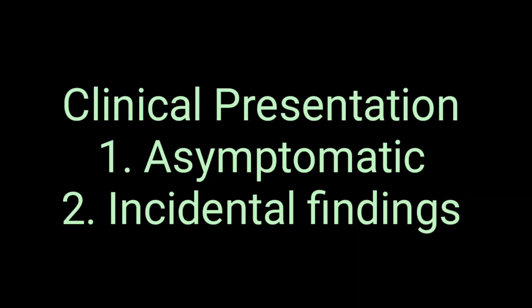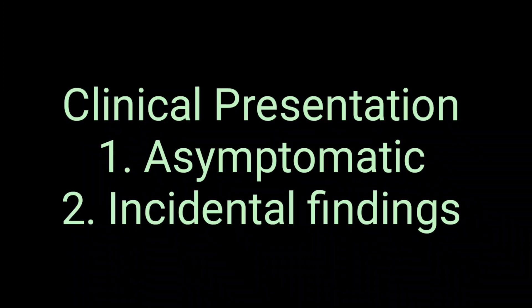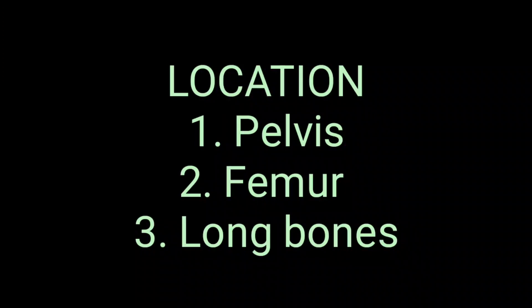Bone island, also called enostosis, is a congenital developmental focus of medullary cortical bone, usually seen in the medullary and cortical region. Normally it is asymptomatic and appears as an incidental finding on X-ray. The common locations for bone island or enostosis are mainly the pelvis region and the femur — especially the neck of the femur — and other long bones can also be involved.